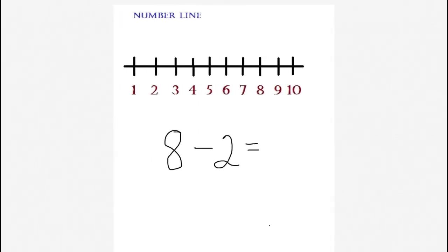For our subtraction problem, we would start with our first term, which is 8, and we would count on going backwards: 7, 6, and our answer would be 6. So that's basically counting on.